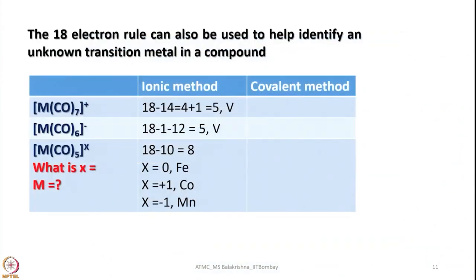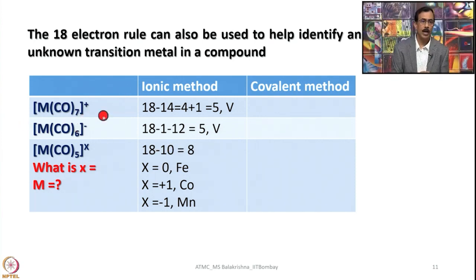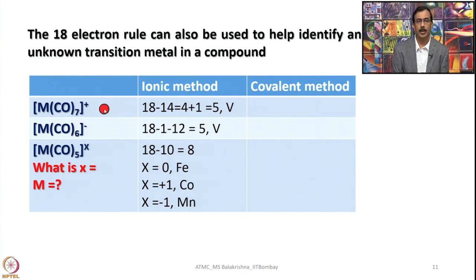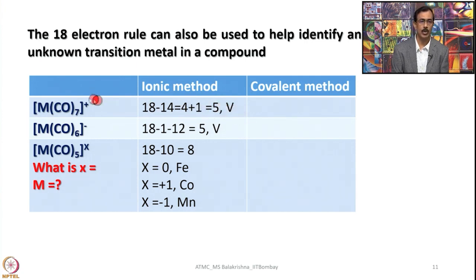Another application of the 18-electron rule is identifying an unknown transition metal in a compound, provided the compound obeys the rule. Write 18 electrons, subtract the ligand contributions, and adjust for charge — the remaining electrons correspond to the metal's d-orbital count. For example: 18 minus 14 from ligands minus 1 for charge gives 5 electrons — that is vanadium (3d3 4s2) in the +1 oxidation state.